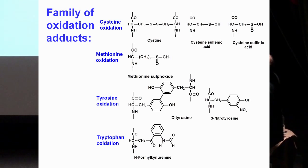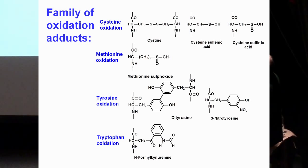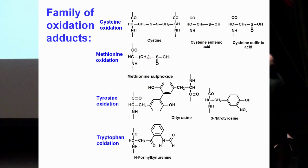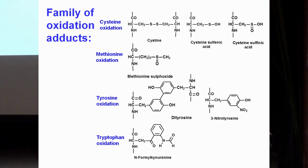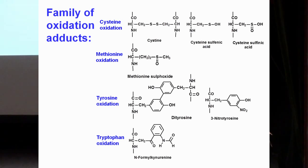There are many adducts produced by oxidative damage of proteins. We quantify methionine sulfoxide, dityrosine, nitrotyrosine, and formyl-kynurenine — major adducts of protein oxidation — as a matter of course, in a panel of about 20 chemically defined protein damage markers that we measure concurrently by LC-MS/MS.